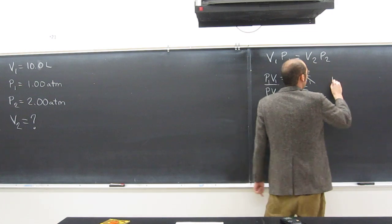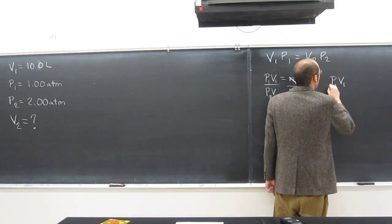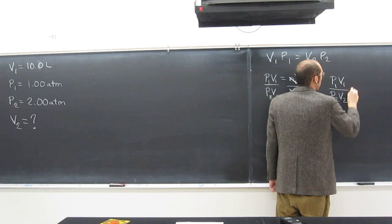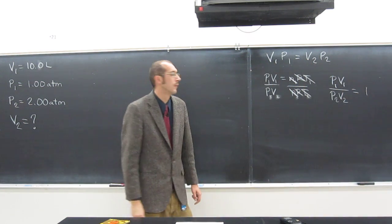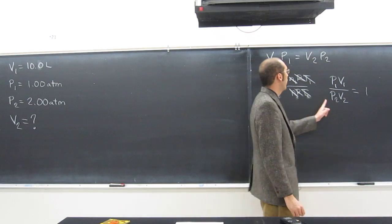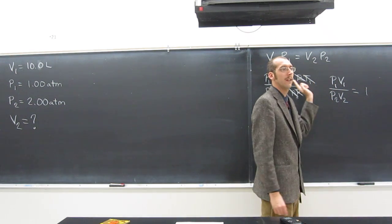So what does this equation break down to? It actually is P1 V1 divided by P2 V2 equals 1, right? Everybody cool with that? And then if we want to, we can make it look like this, right?